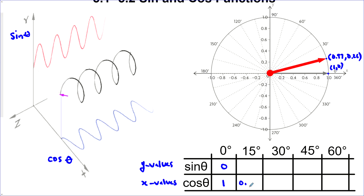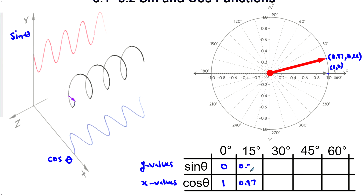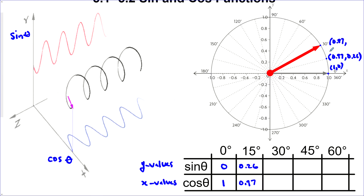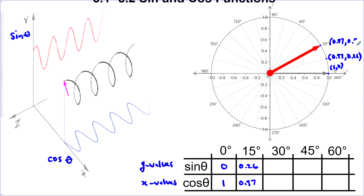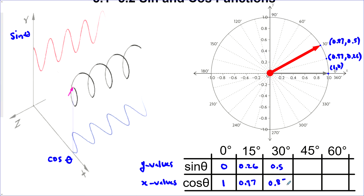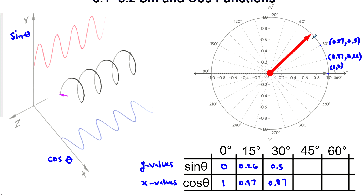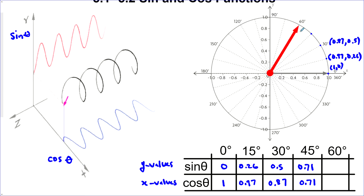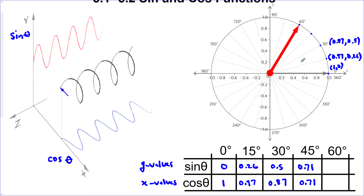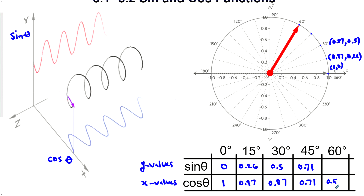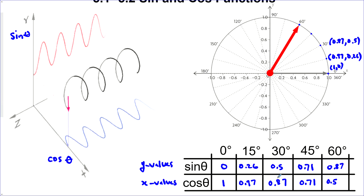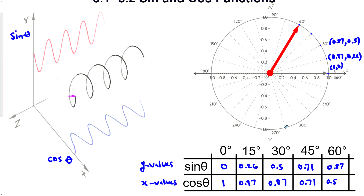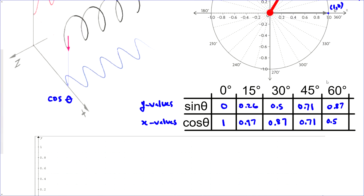So our cosine is 0.97 and sine is 0.26. At 30 degrees we estimate the point at about 0.87 for x and 0.5 for y, so sine is 0.5 and cosine is 0.87. At 45 degrees both x and y are about 0.71. At 60 degrees things start to repeat — cosine is 0.5 and sine is about 0.87, which is what we had for 30 but switched. These points keep repeating, though some become negative depending on the quadrant.